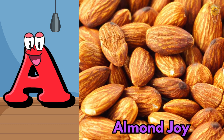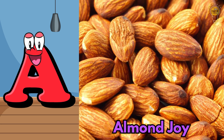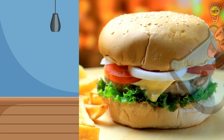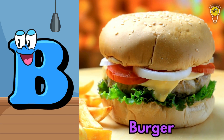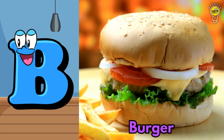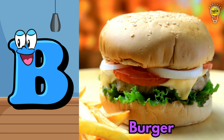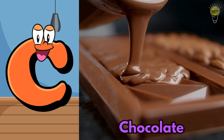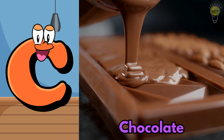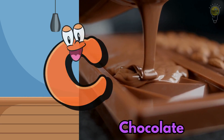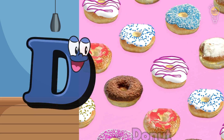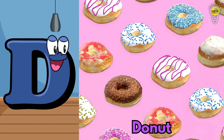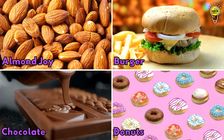A is for Almond Joy. A, A, Almond Joy. B is for Burger. B, B, Burger. C is for Chocolate. C, C, Chocolate. D is for Donuts. D, D, Donuts.